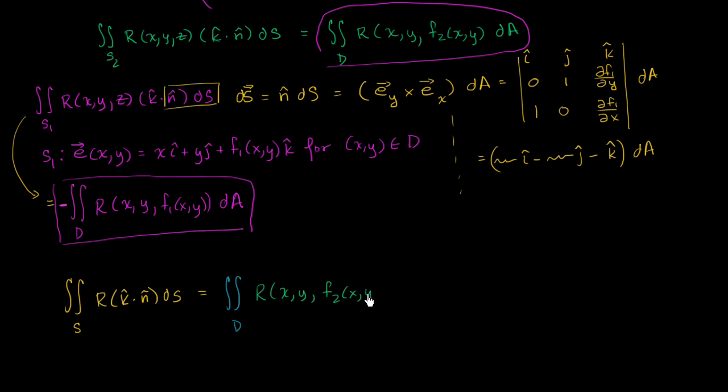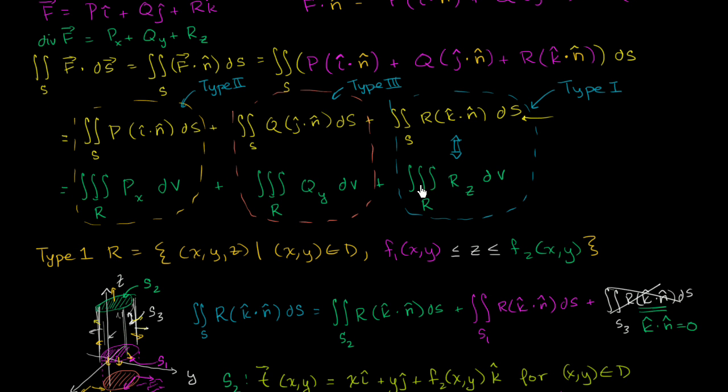Sorry, f1 of x, y. Be careful here. That's this thing right over here, all of that times dA. Now, we just showed this is equal to this. All we have to show now is that this is also equal to that same expression, and we will have proven this for the type one case. We can use the exact same argument for the type two and type three cases and feel good that the divergence theorem is about to be proven for a simple solid region.